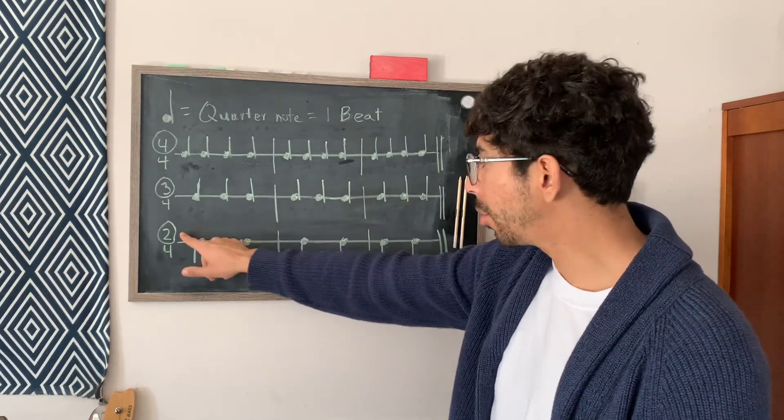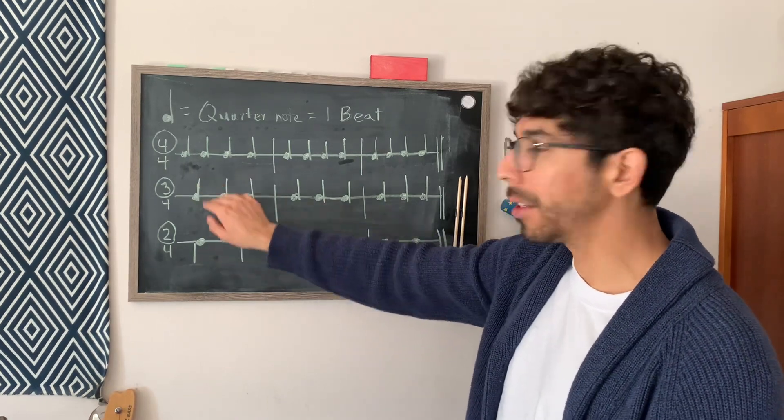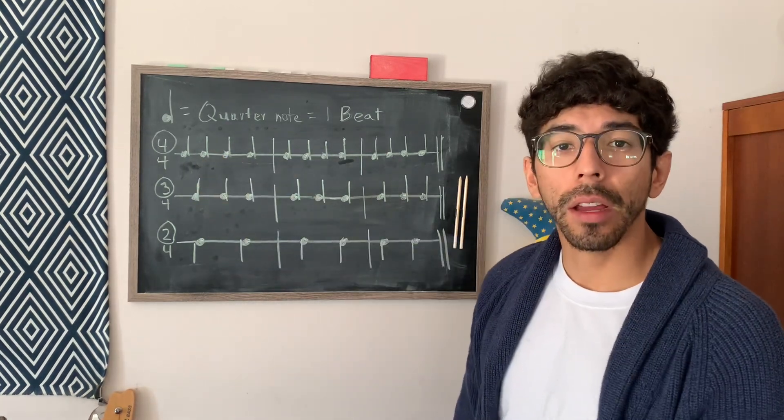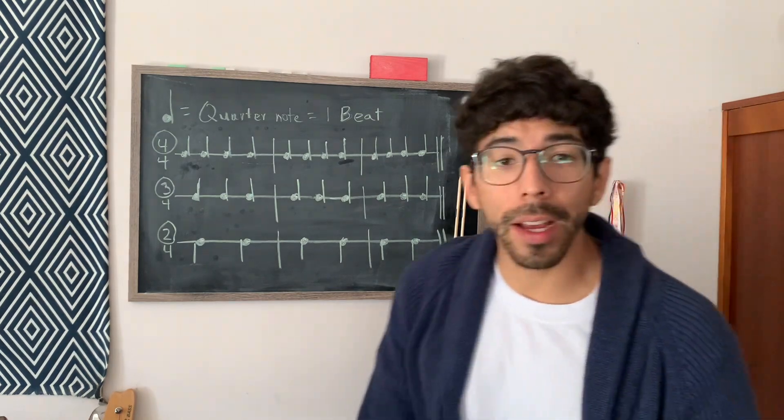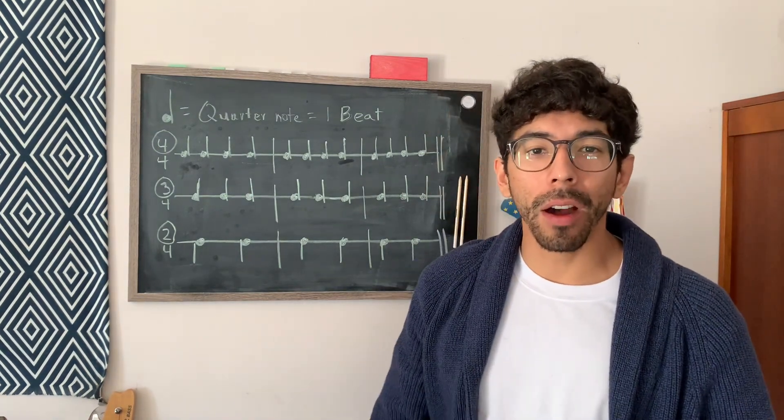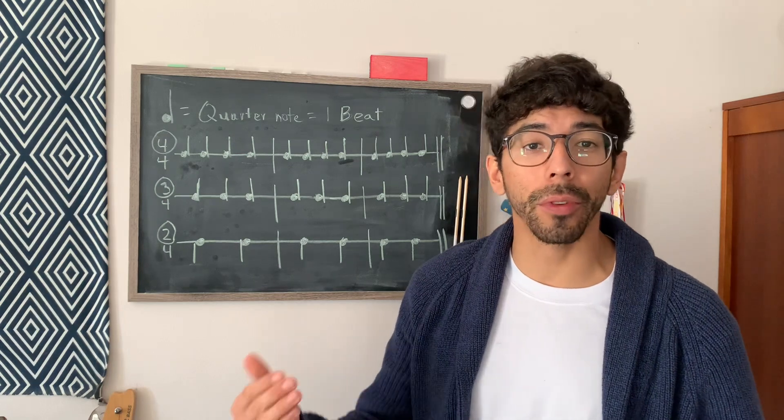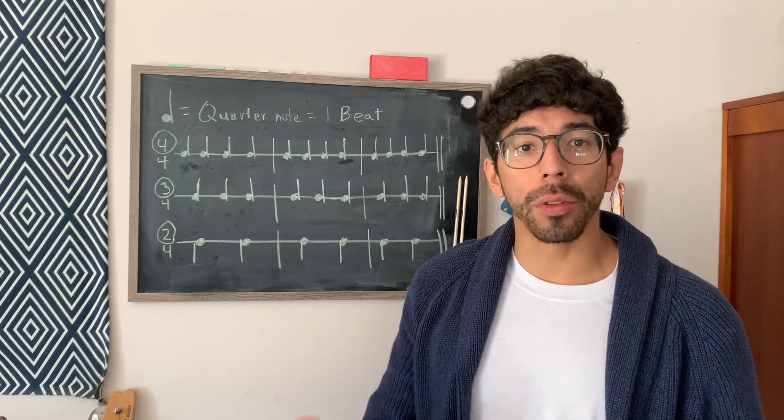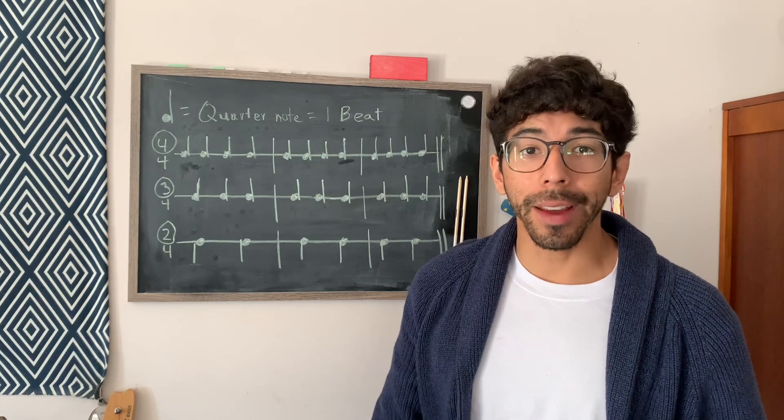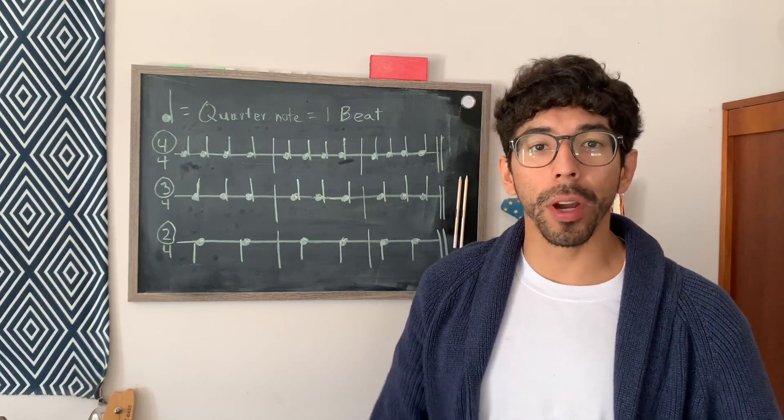And then just worry about the top number changing, which just represents how many beats are in a measure. So two, there's going to be two beats, three is going to have three beats, and four is going to have four beats. So yeah, that concludes today's episode. If you like my content, or if you have suggestions for future content, please feel free to comment below. You could also subscribe to my channel. And yeah, I look forward to seeing you in future episodes.